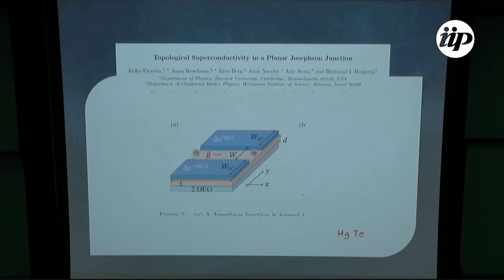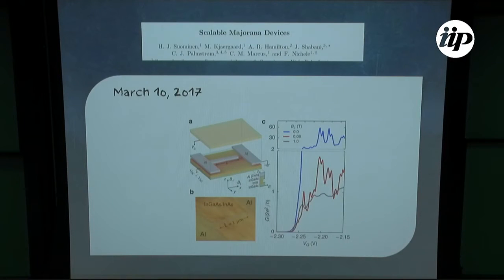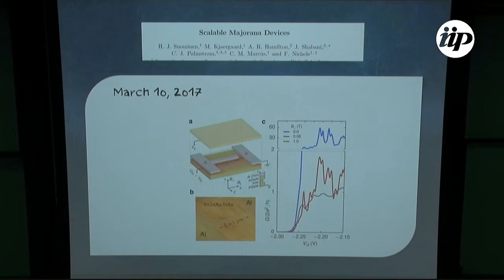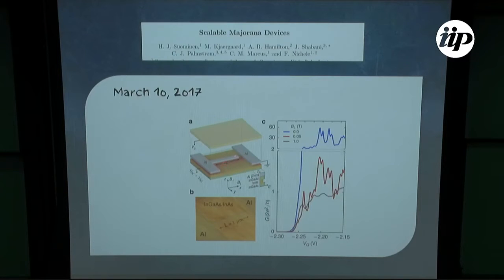Recently — about ten days ago — another experiment was posted on the archive from Copenhagen. Here they have a 2D electron gas and cover aluminum only on part of the sample in a specific pattern, effectively creating a wire connected to a reservoir. With a gate, since the layer is so thin, they can control the chemical potential in the system, and the conductance is very close to 2e²/h, as expected.